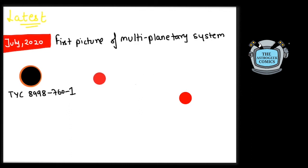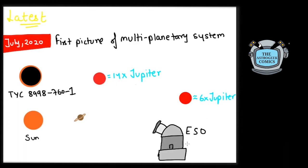Both the gas giants are farther from the star than Saturn is from the Sun. The inner one weighs 14 Jupiter masses, while the outer one weighs 6 Jupiter masses. This duo was photographed by the very large telescopes of ESO.